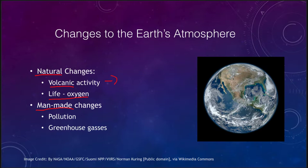Volcanic activity can put dust into the atmosphere. Massive eruptions — things like a super volcano — can actually increase the dust content of the atmosphere, blocking out sunlight and cooling off the Earth.